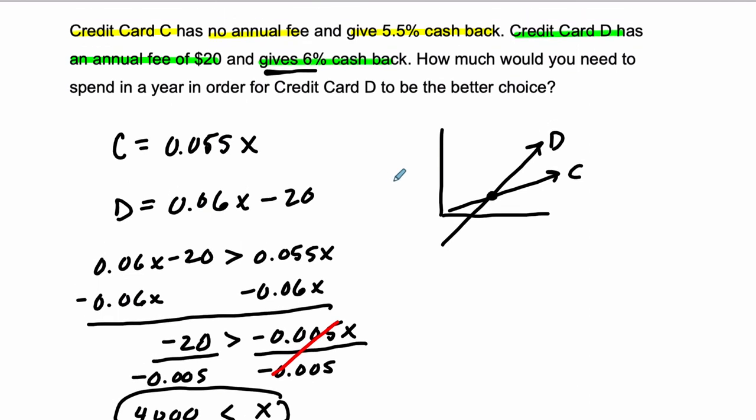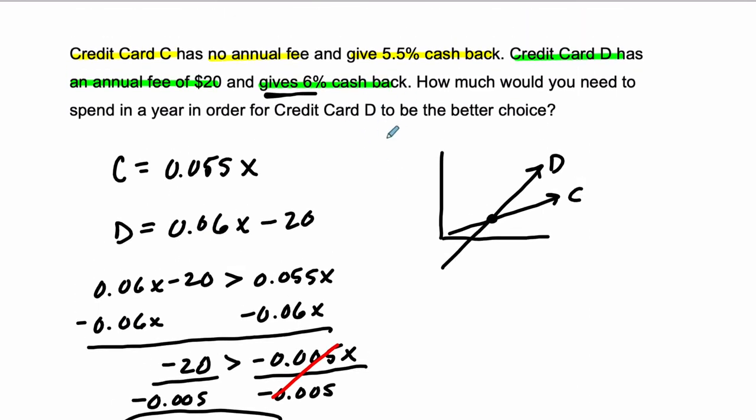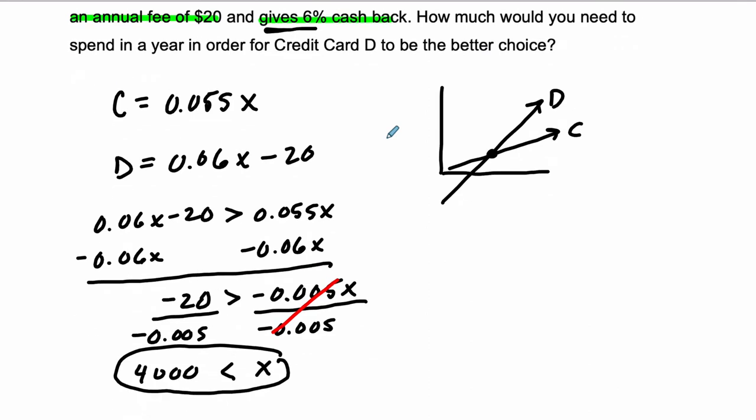It's quite a bit. So you pick credit card D if you knew for sure that you're spending more than $4,000, but otherwise credit card C is a better choice. Thanks.